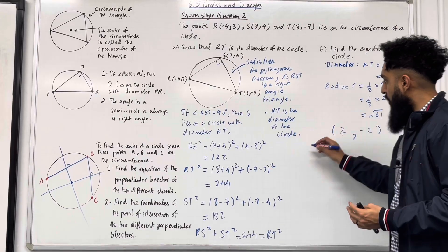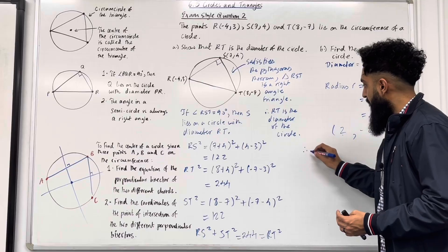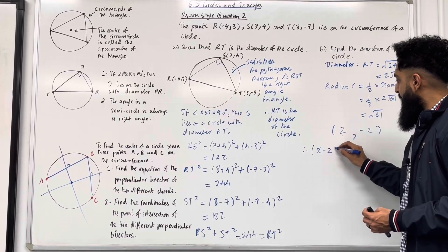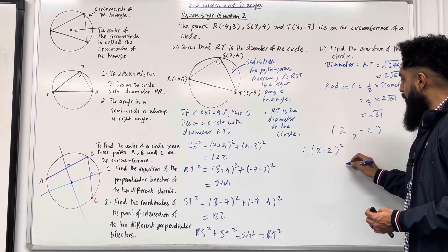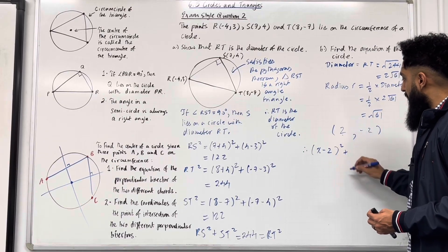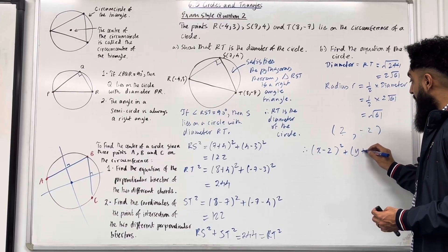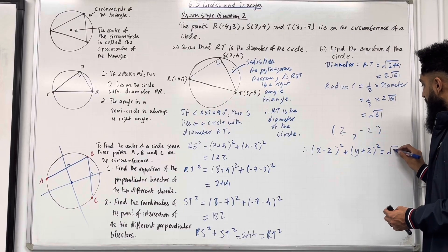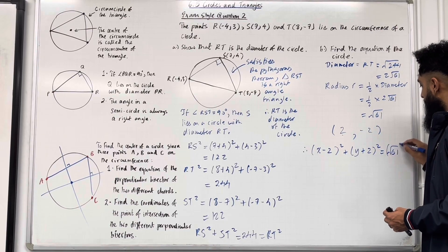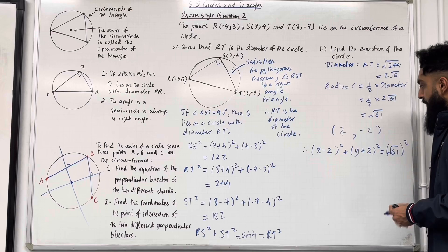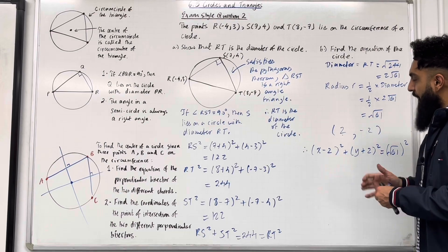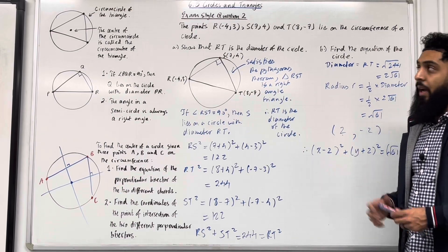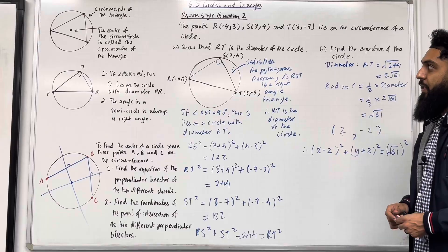The equation of the circle is therefore (x − 2)² + (y + 2)² = (√61)², which equals 61. That completes exam-style question 2 and this teaching video.